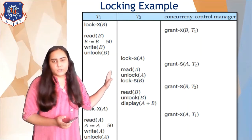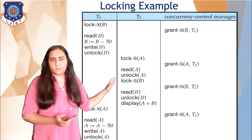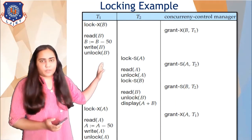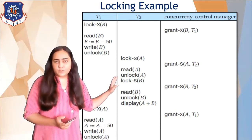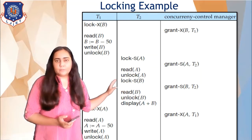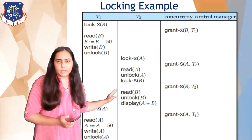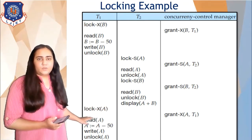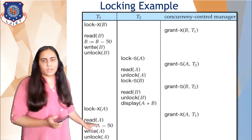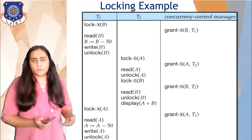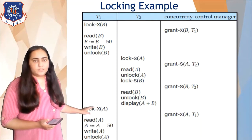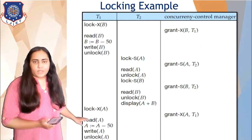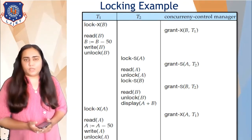Transaction T2 reads data item A, unlocks it, and then obtains a shared lock on B. At this point T1 has already unlocked B, so there's no waiting and the concurrency control manager grants access to that lock. T2 then reads B, unlocks B, and displays A plus B. Then T1 tries to get an exclusive lock on A, which is also granted since no other transaction holds that lock. T1 reads A, subtracts 50 from A, writes A, and unlocks A. This is an example of the locking protocol in practice.